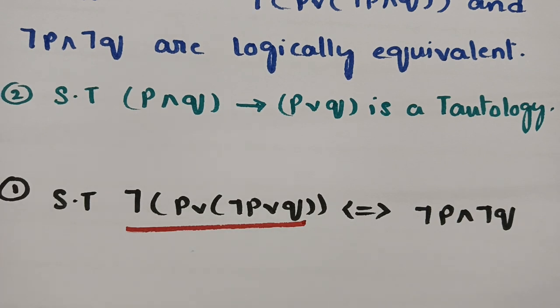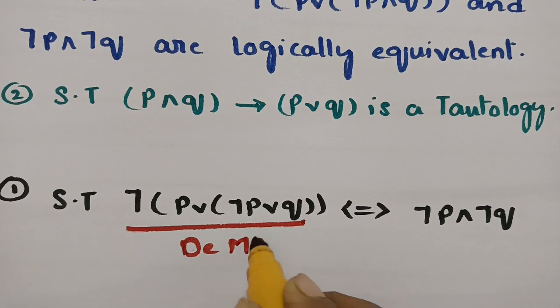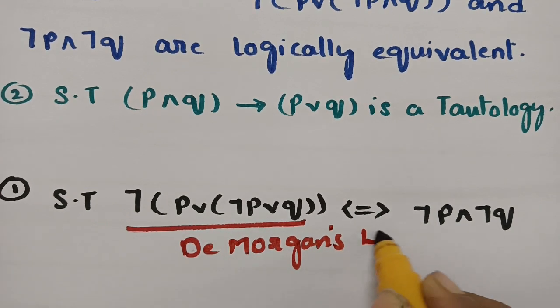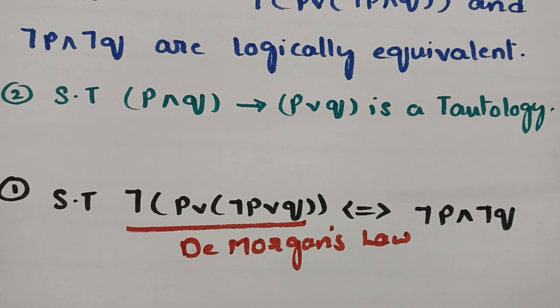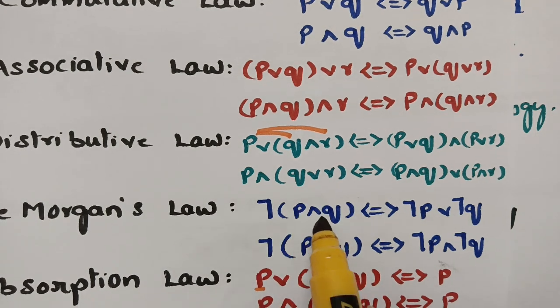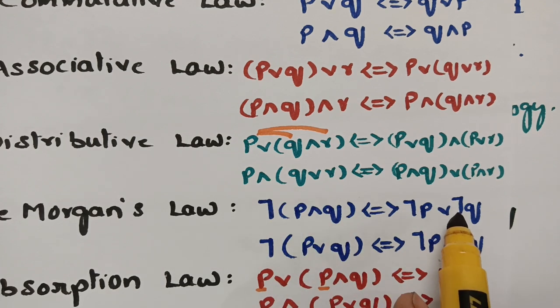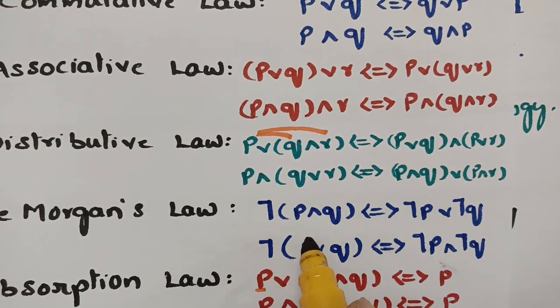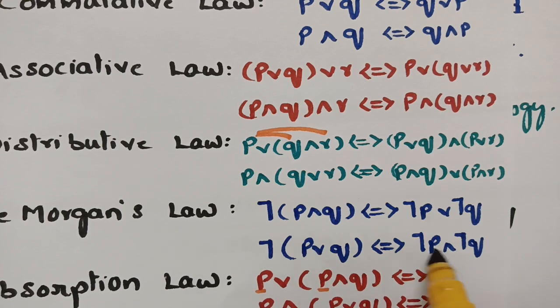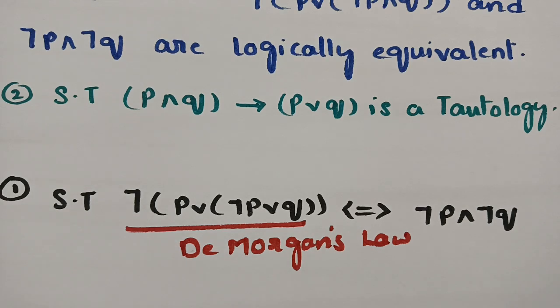First, I am going to use De Morgan's law. According to De Morgan's law, if you send the negation inside, the 'and' becomes 'or': negation(A and B) = negation A or negation B. Conversely, if you send the negation inside an 'or', it becomes 'and': negation(A or B) = negation A and negation B. Applying De Morgan's law here, sending the negation inside gives: negation P and negation(negation P or Q).